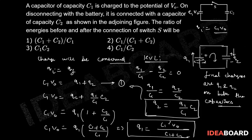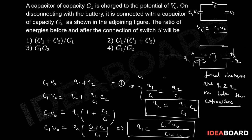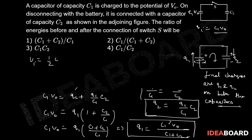Now we need the energies. The initial energy U_initial is ½·C1·V0², since C1 was charged to potential V0. This is equation number two.